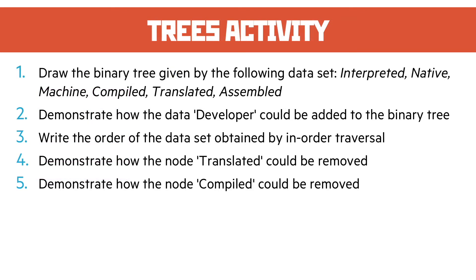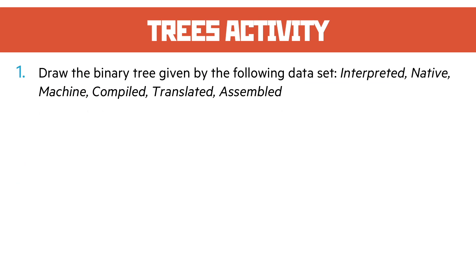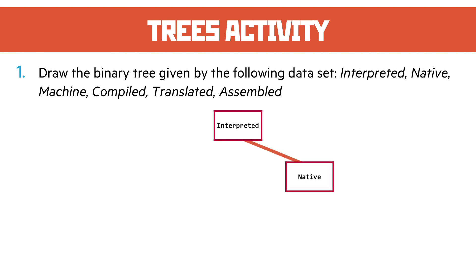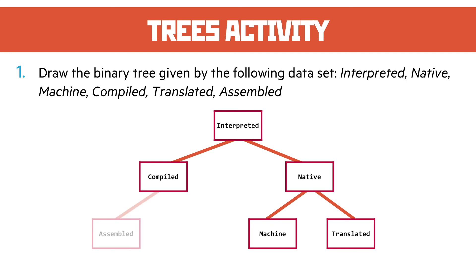Finally, the trees activity. Draw the binary tree given by the following data set. We start off with 'interpreted' — that's going to be our root node. 'Native' is alphabetically greater, so it goes to the right. 'Machine' is greater than interpreted but less than native, so it goes to the left of native. 'Compiled' is less than interpreted, so it goes to the left. 'Translated' is greater than interpreted and greater than native, so it goes to the right there. And 'assembled' is less than interpreted and less than compiled, so it goes directly to the left under there.